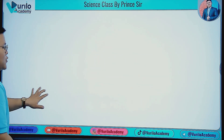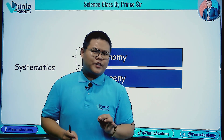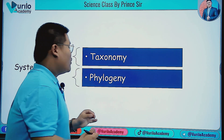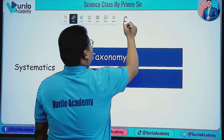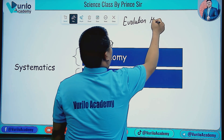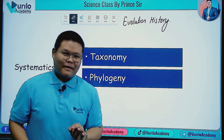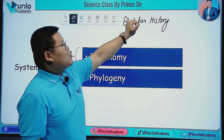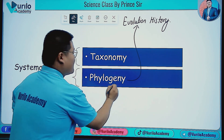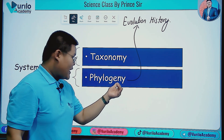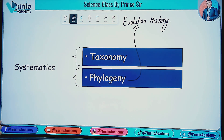The next step after identification is nomenclature — assigning a name to the newly identified species. Species of animals can vary widely; they can be worm species, or other types entirely. So remember this concept clearly.